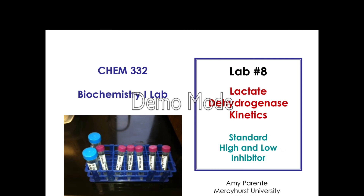Moving into the first pre-lab question, it's basically just asking you to think about the chemistry. It says: write the reaction drawing out structures for the conversion of lactate to pyruvate by the enzyme lactate dehydrogenase. Be sure to include all required cofactors.